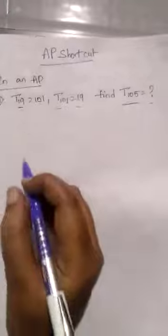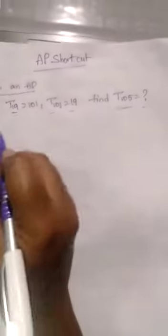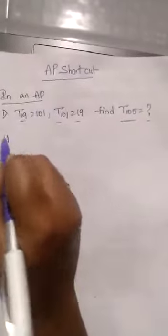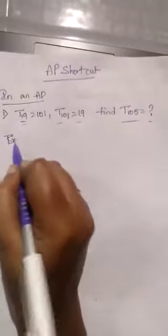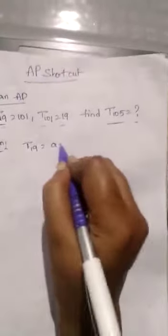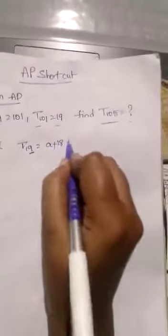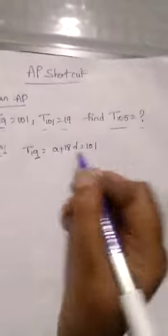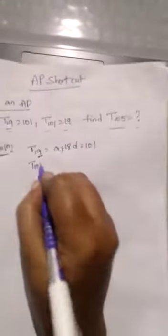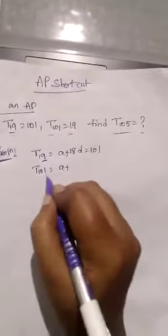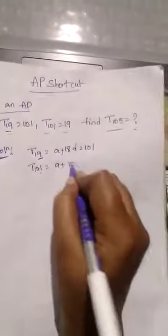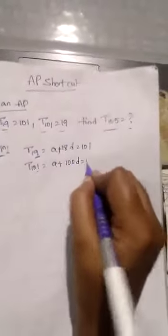So first solve this question using traditional method solution. T19 means A plus 19 minus 1, 18D. 18D equal to 101. And T101 equal to A plus 101 minus 1, 100. 100D equal to 19.